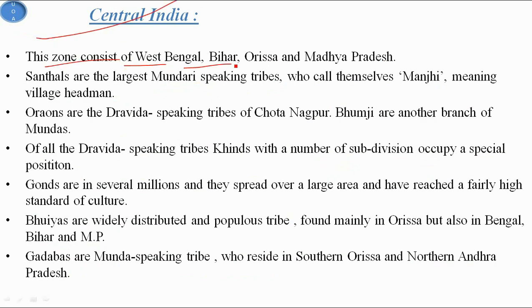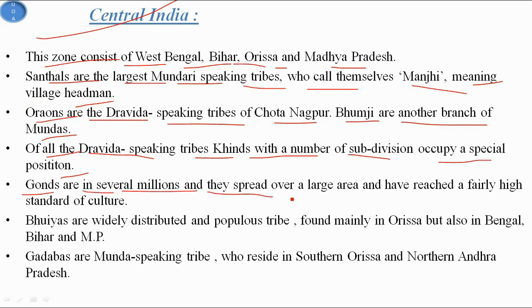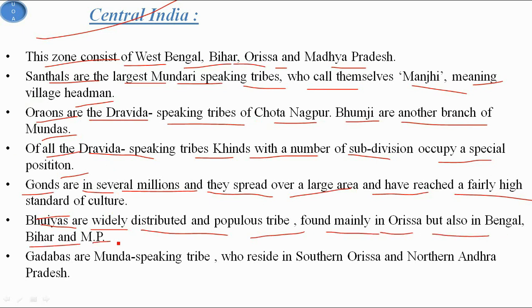Central India consists of West Bengal, Bihar, Orissa, and Madhya Pradesh. Santals are the largest Mundri-speaking tribes who call themselves Manji, meaning village headmen. Uraons are the Dravidian-speaking tribes of Chhota Nagpur. Bhumji are another branch of Mundas. Of all the Dravidian-speaking tribes, Khans occupy a special position across several regions. Gonds number in the millions, spread over a large area, and have reached a fairly high standard of culture. Bhuyas are widely distributed and populous, mainly found in Orissa but also in Bengal and Bihar. Gadabas are Munda-speaking tribes residing in southern Orissa and northern Andhra Pradesh.